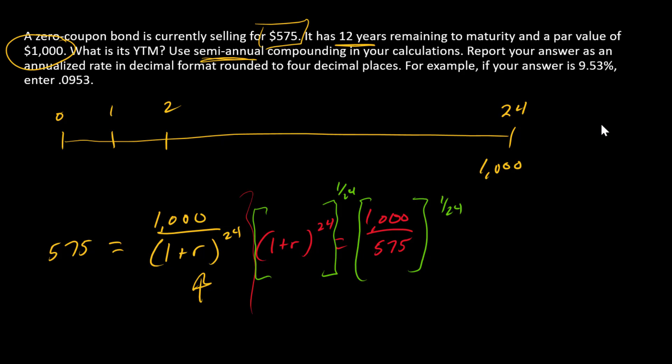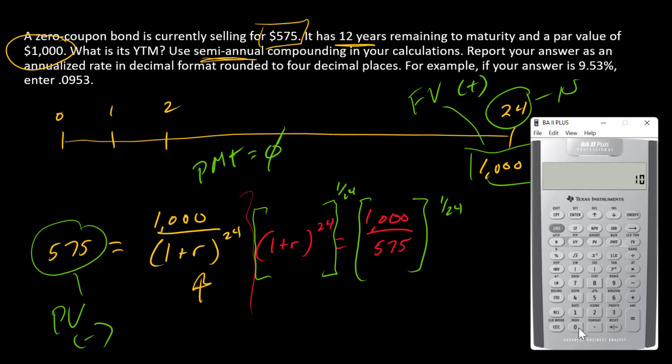Alternatively, I could say $1,000 is FV in a financial calculator. 24 is N. 575 is PV. That's going to be negative. This is going to be positive. And then PMT is 0. And then solve for I. So $1,000 goes into FV. 575 negative goes into PV. 24 goes into N. 0 goes into payment. Compute I. And there I have my 2.33.